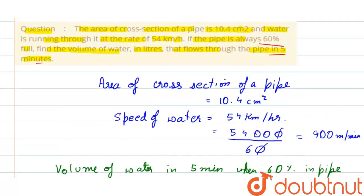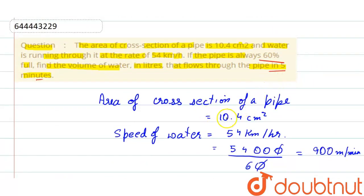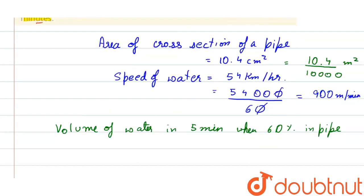So firstly we will convert 10.4 centimeter square into meter square. For that we can write 10.4 by 10,000, then it will be converted into meter square.